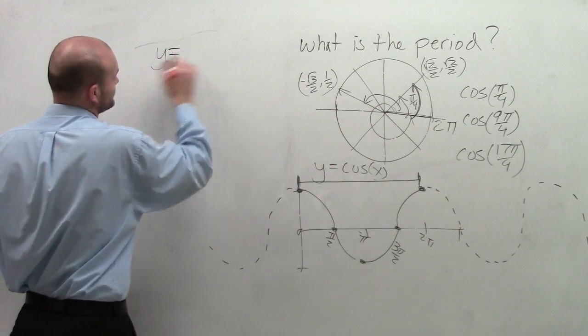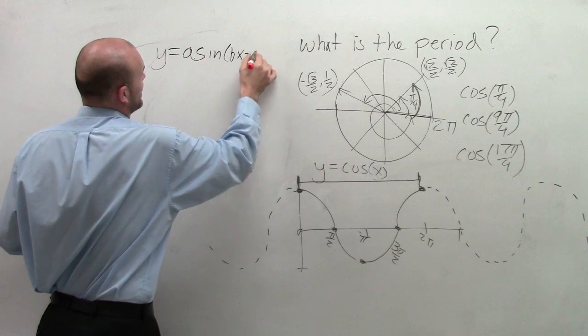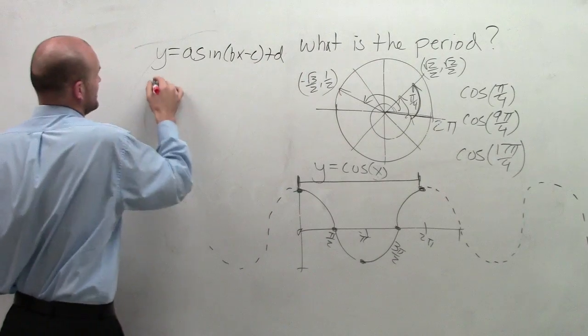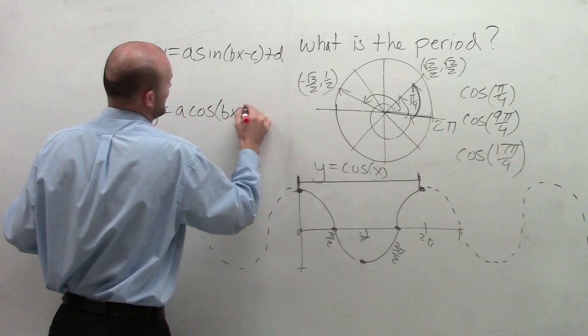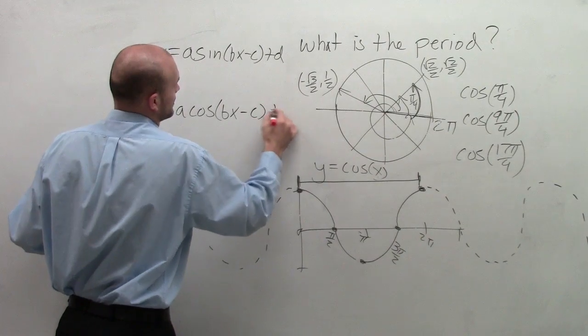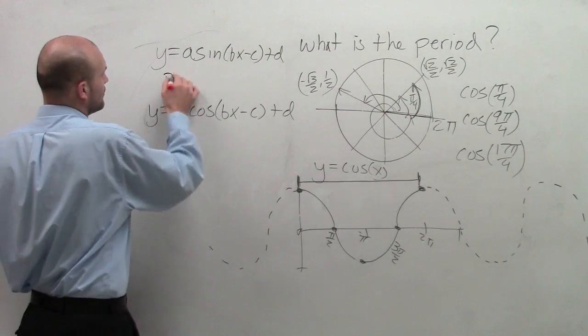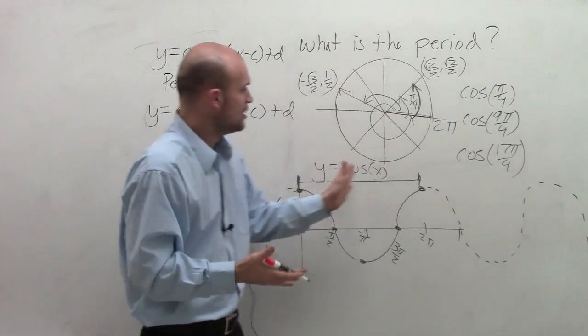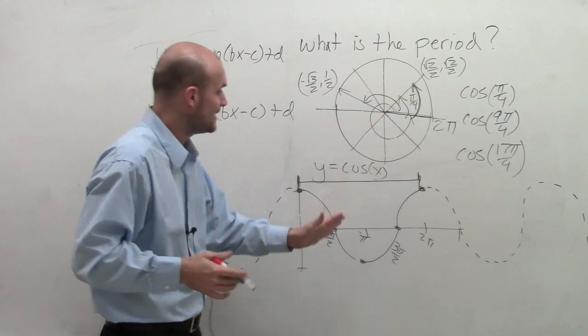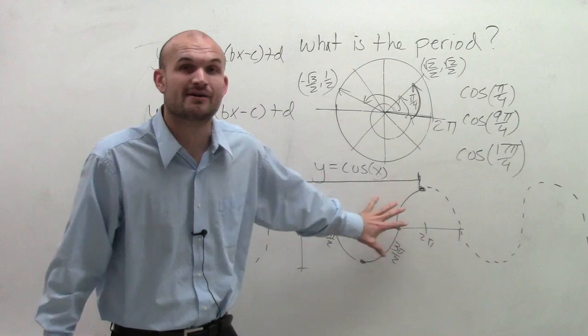So we have y equals a times sine of bx minus c plus d, and we have y equals a cosine of bx minus c plus d. And what we notice is when trying to determine the period, the period is going to be affected. So we know that for cosine and for sine, this distance where it takes the graph to repeat itself, even though I only have the cosine graph pictured,